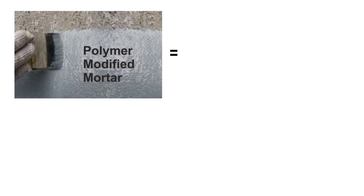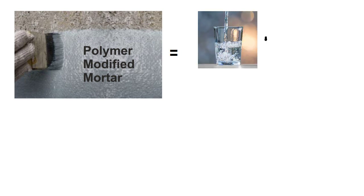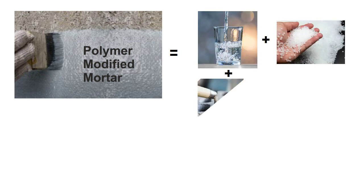Hello friends, Polymer modified mortar is produced by mixing water with polymer admixtures, cement and sand.